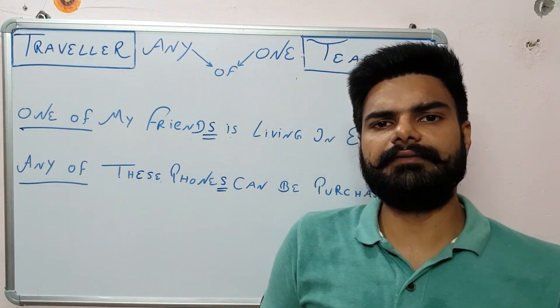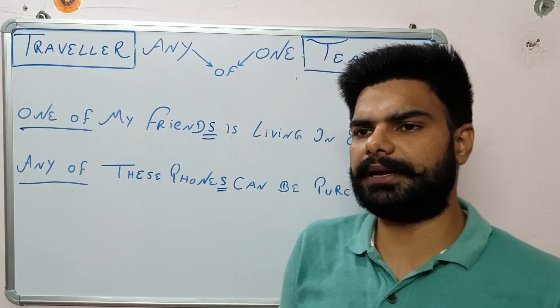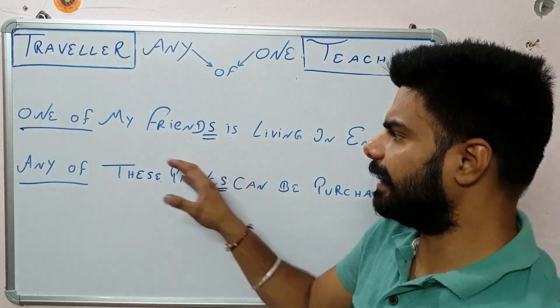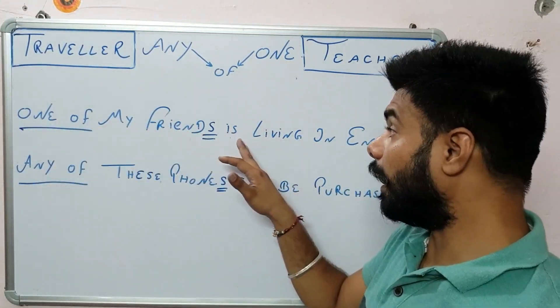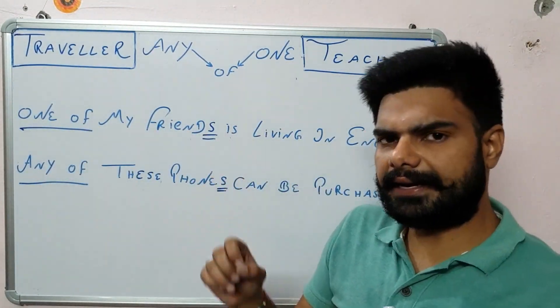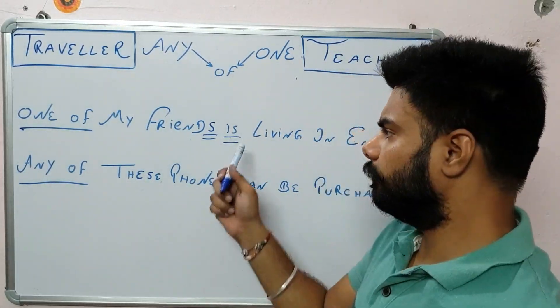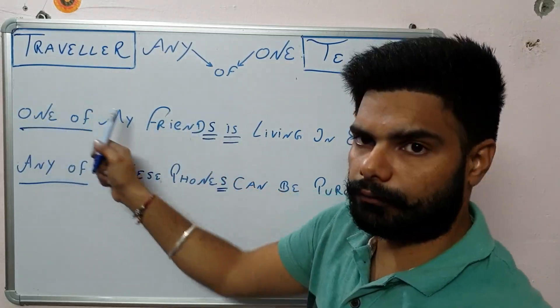Now let's discuss why we have to make a plural arrangement over here. One of my friends, and again the important thing is that one of my friends are living or is living? The right version over here is is. We are not going to make a plural verb with the words friends. It's a single verb because one of.